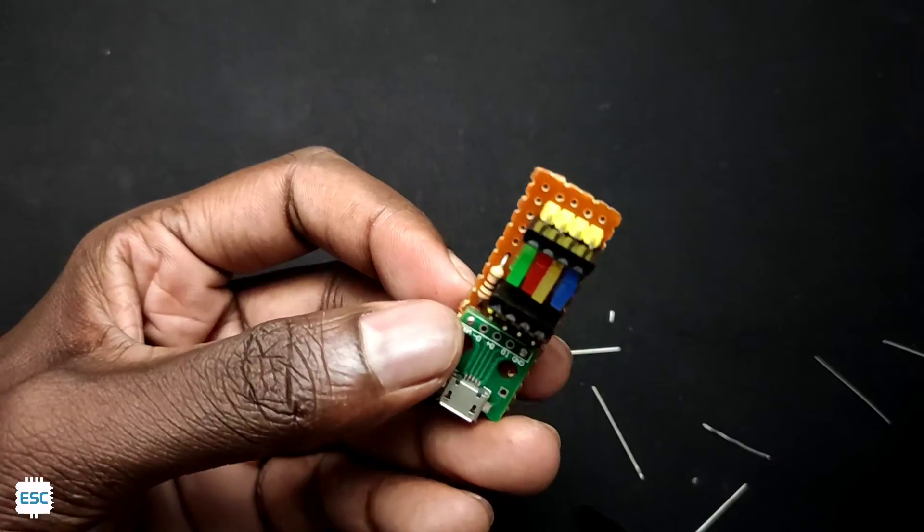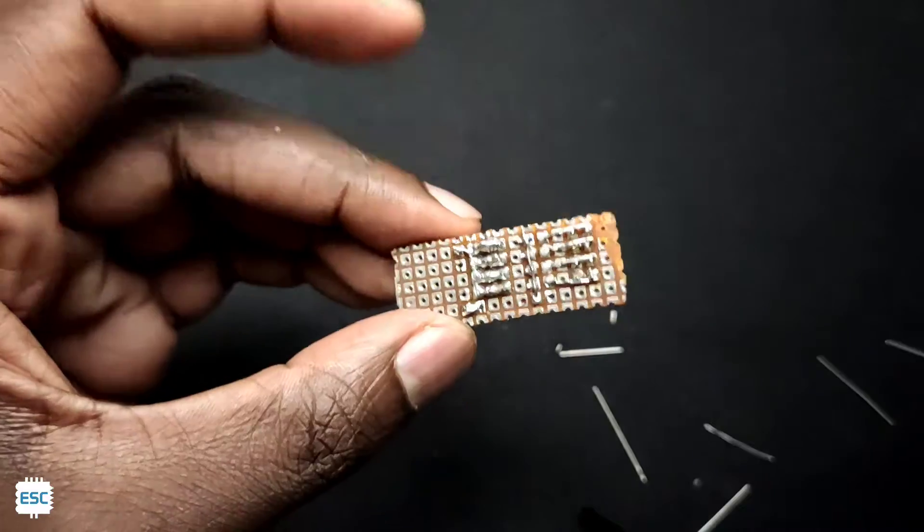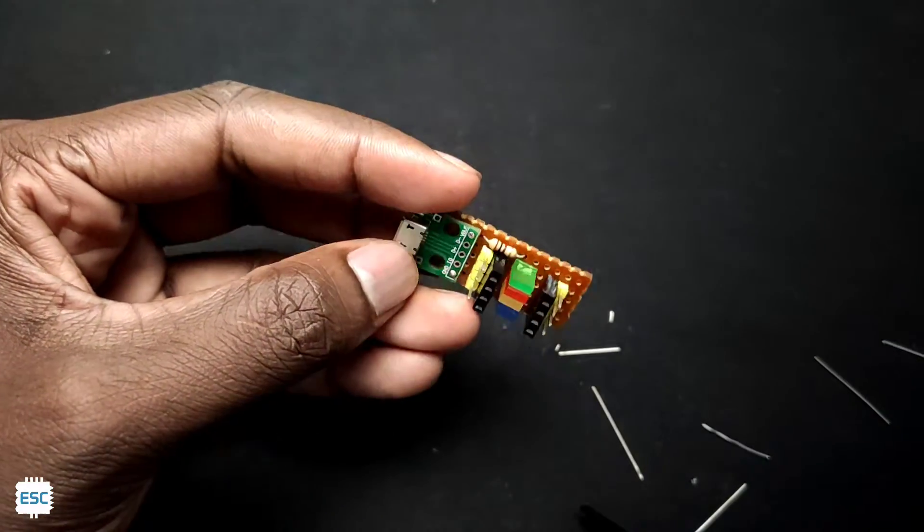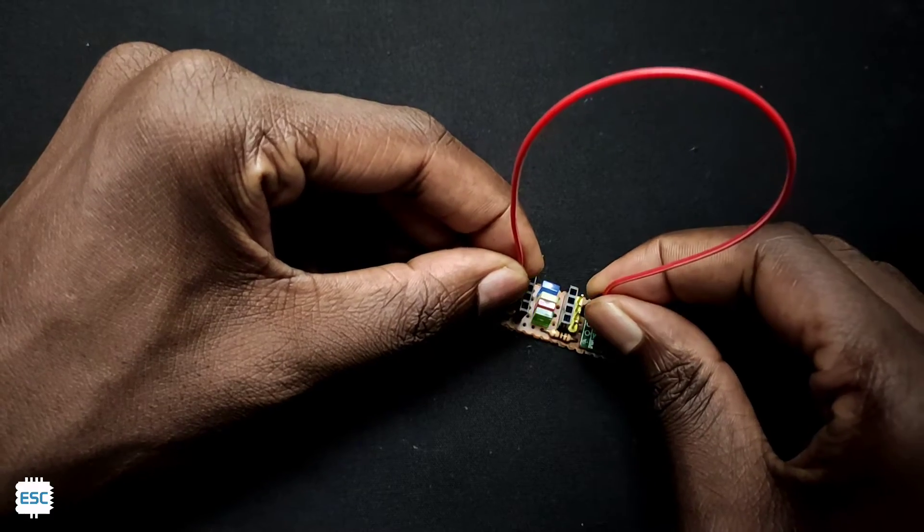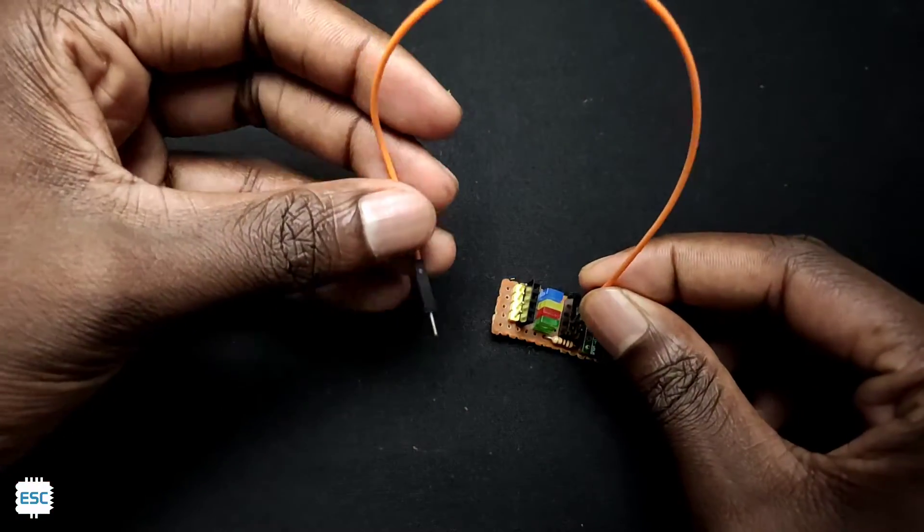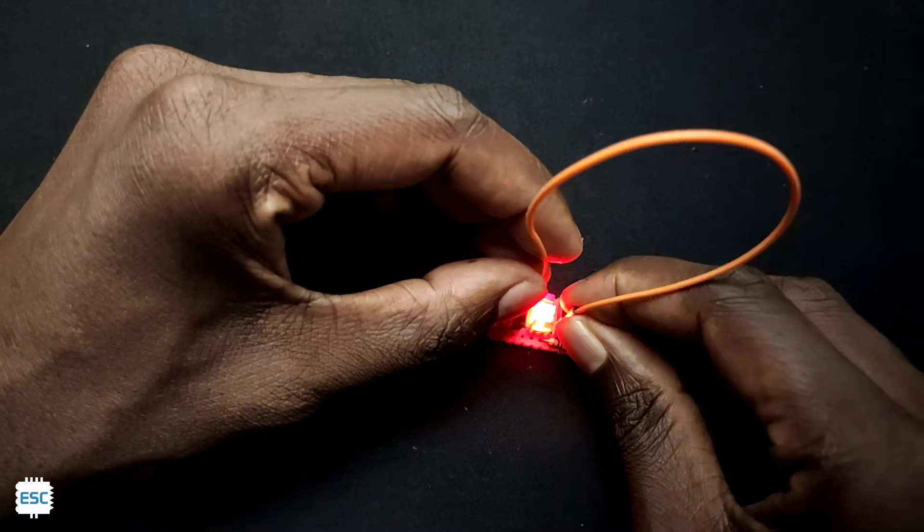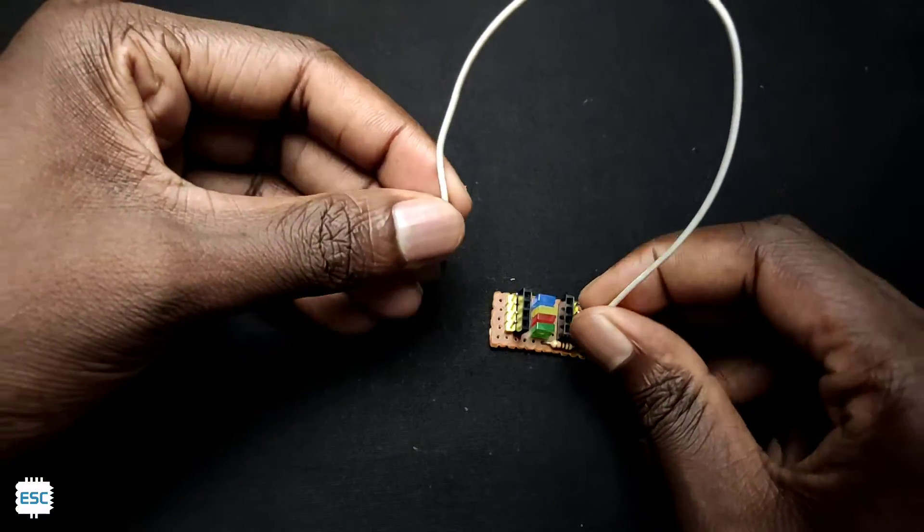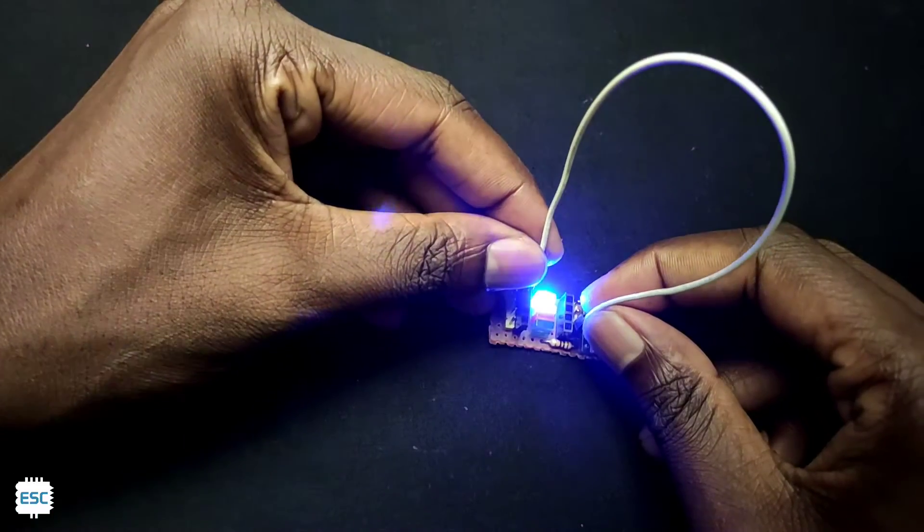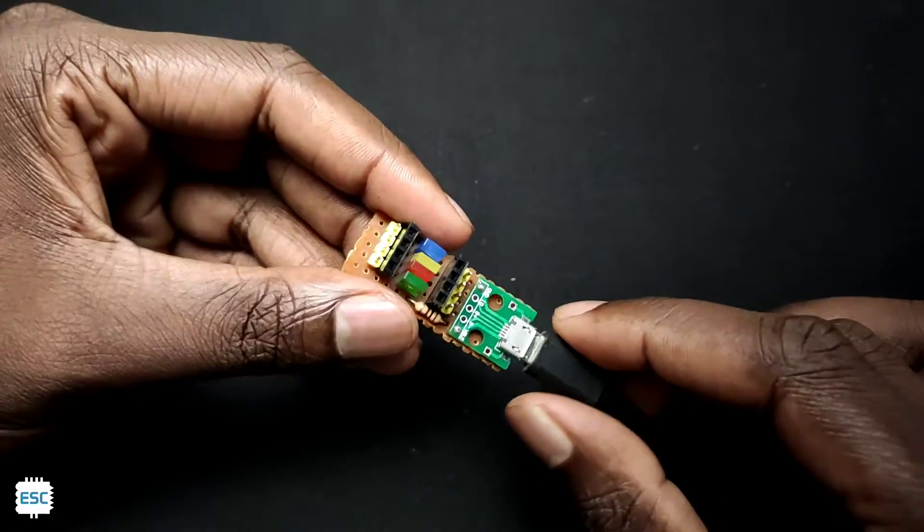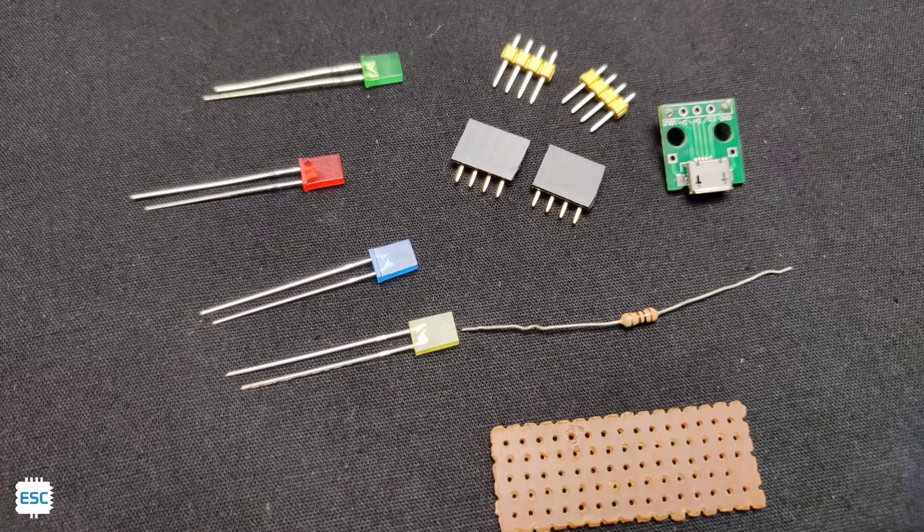So here I made a small circuit to test jumper wires easily. With this tiny circuit, we can easily check male to male, male to female, and female to female jumper wires. If the jumper wire is okay, then the LED will light up. Now let's see how to make this.